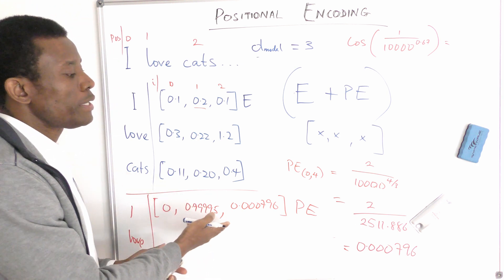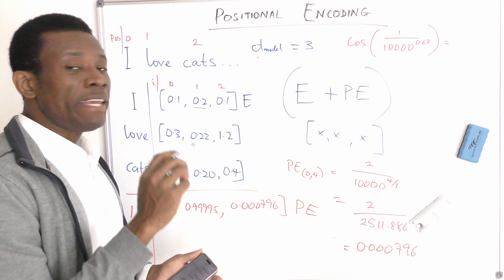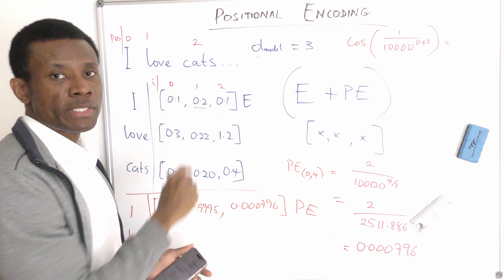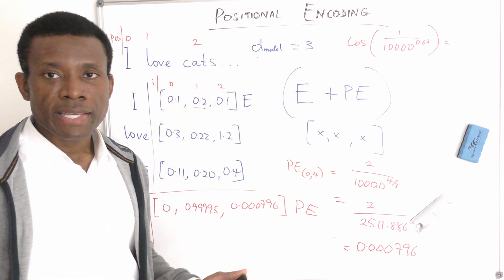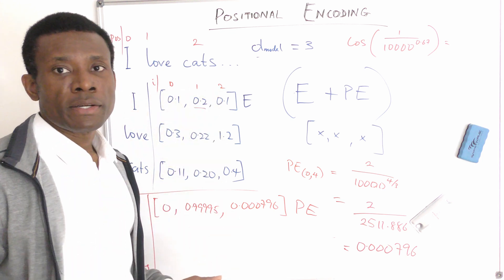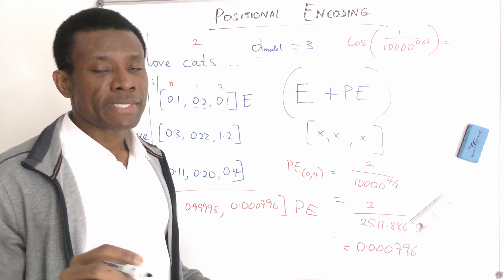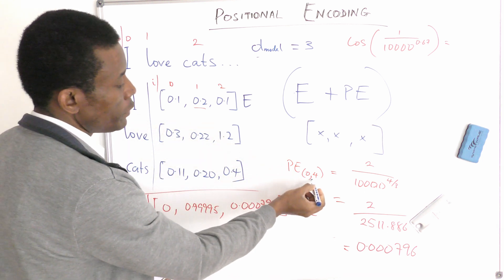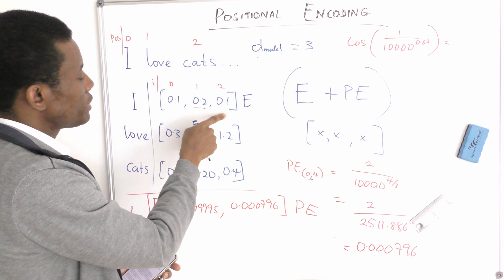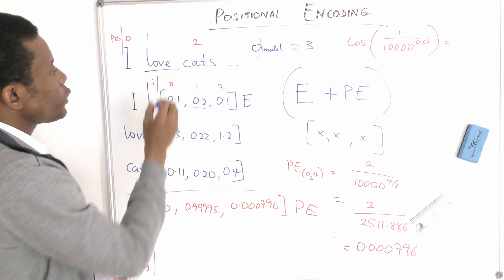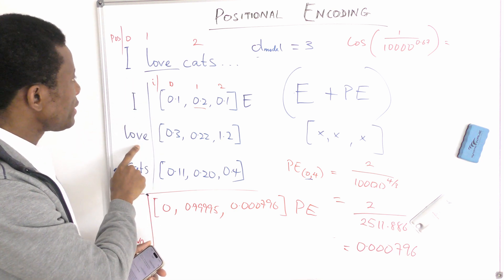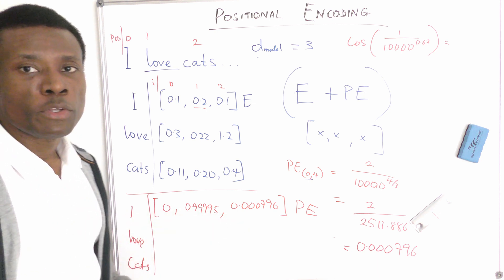To summarize: we calculate positional encoding using either the sine or cosine function. For even dimension indices (0, 2, 4, 6, ...) we use the sine function, and for odd dimension indices (1, 3, 5, ...) we use the cosine function. Now your assignment: calculate the positional encoding values for position 1 and sum them up with the embeddings. Let me know your answer in the comment box below.